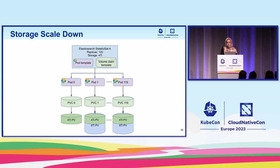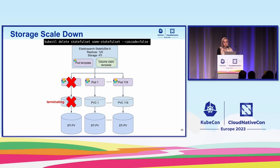To scale down the disk — remember, we cannot update the StatefulSet — so instead, the custom controller deletes the StatefulSet object with the cascade flag set to false. This is important: setting this flag to false allows keeping the pods and disks after deleting the StatefulSet object. After the StatefulSet is deleted, the custom controller recreates it with the new smaller size. All other specs remain the same, but only storage changes — from eight to four tebibytes, for example — since we are scaling down storage.